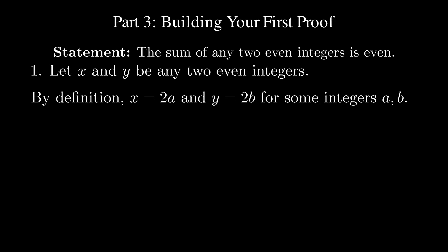Notice how we're using, again, these arbitrary constants a and b to represent some integer. This is what it means for x and y to be two even integers. And this is why it's so important to know definitions when doing proofs.